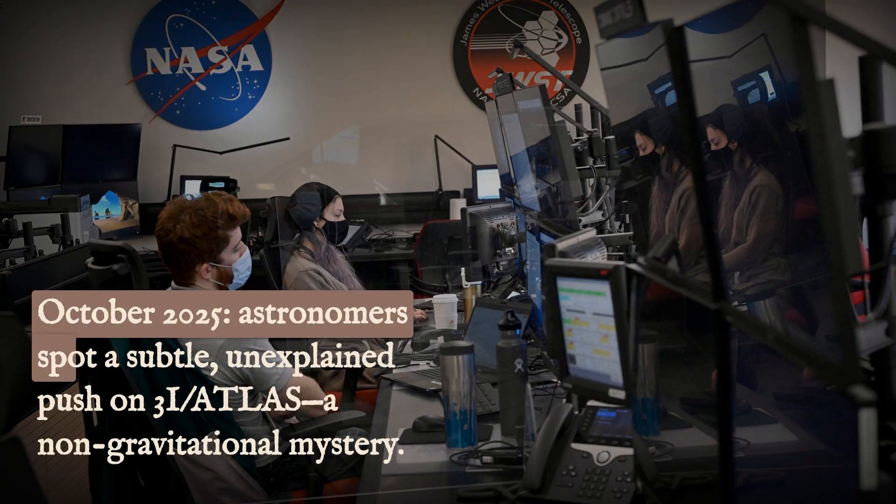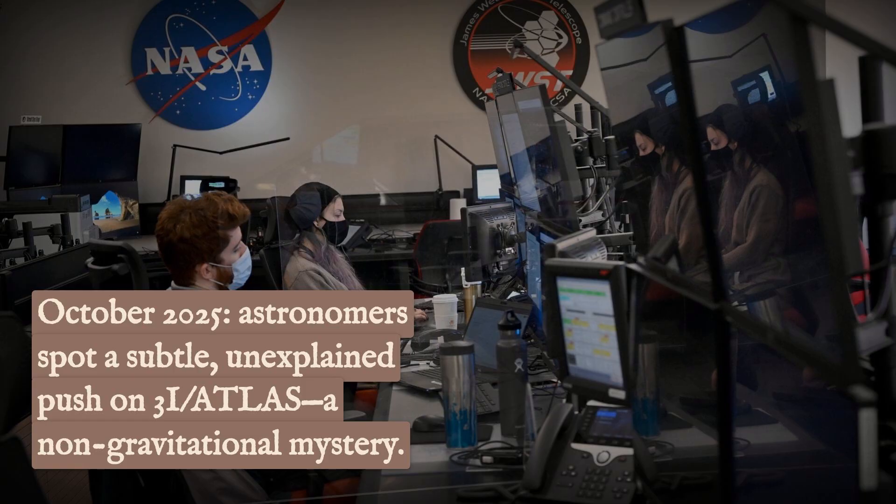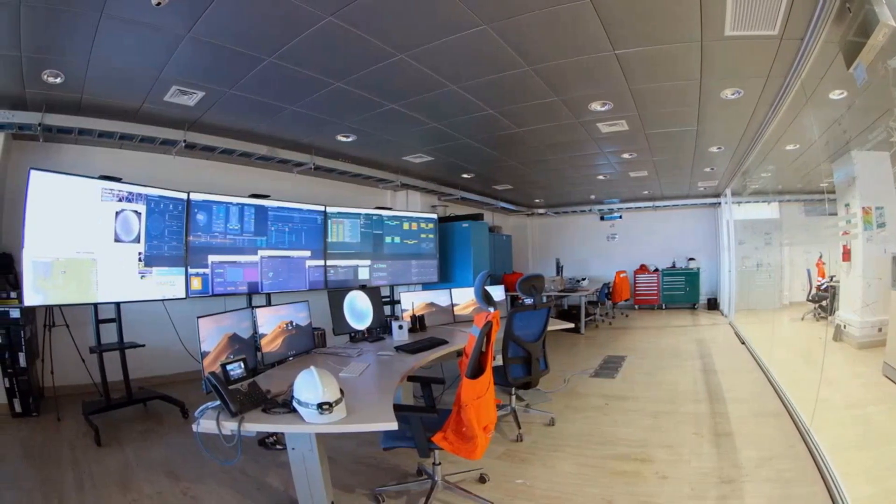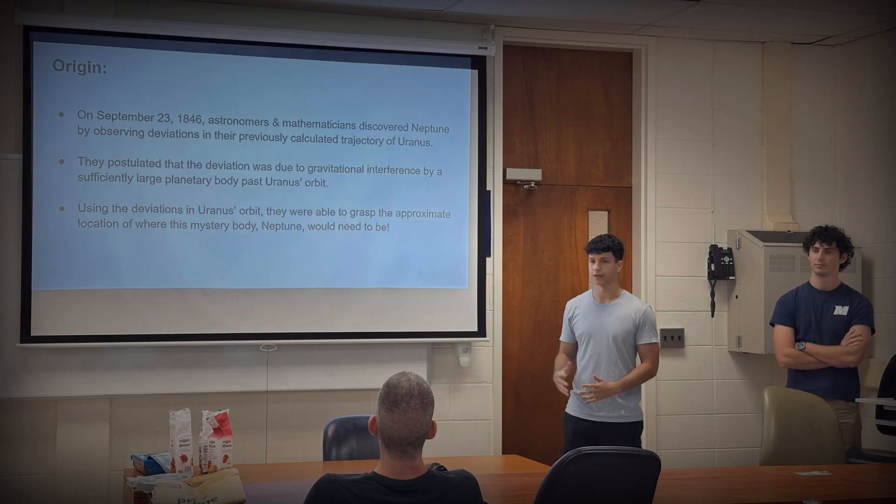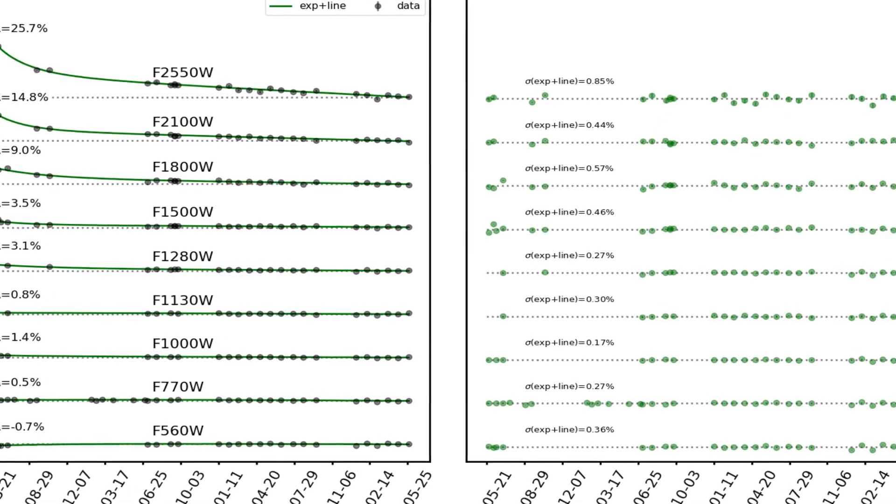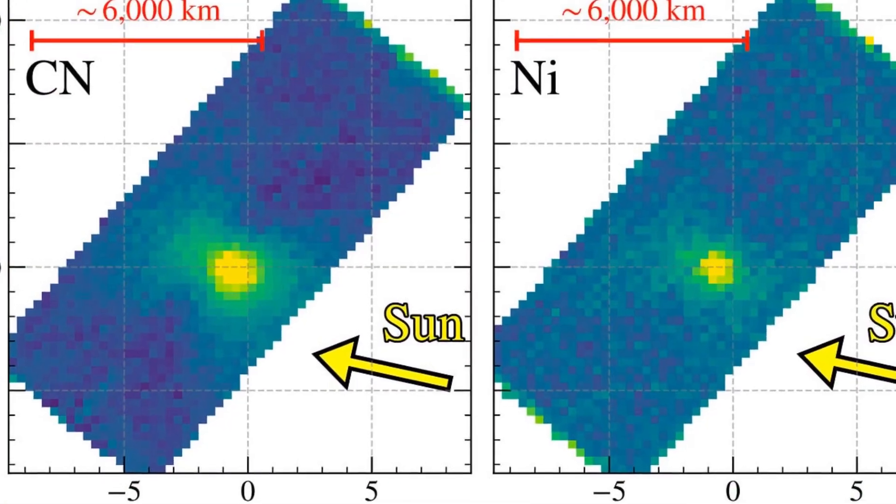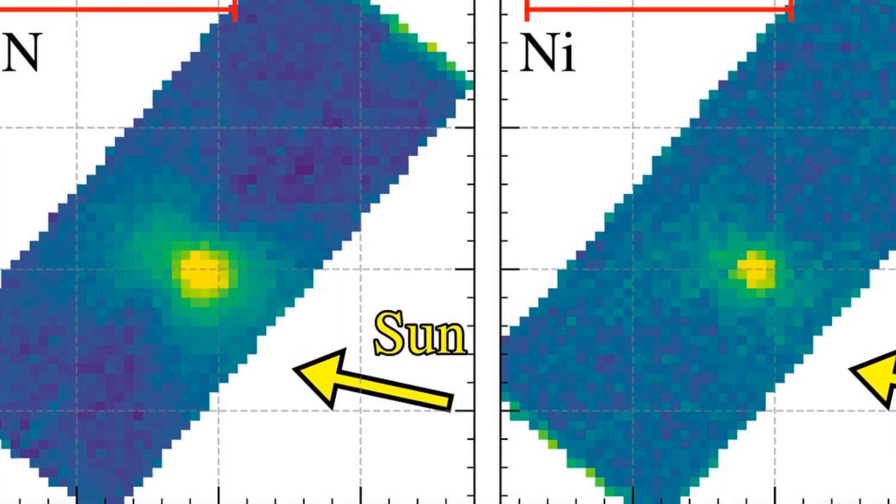October 2025. Astronomers spot a subtle, unexplained push on 3I Atlas, a non-gravitational acceleration that shouldn't be possible without some hidden force. Could this be a slow-burn probe, as the engine hypothesis proposes, or is there a more conventional answer? Understanding the real stakes means questioning what counts as evidence and why this odd momentum profile changes the entire debate.